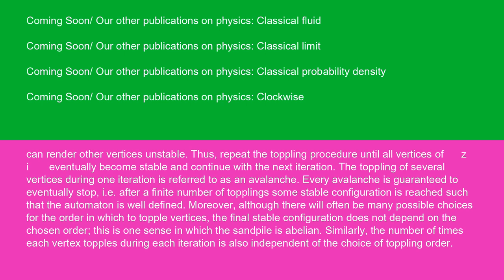Moreover, although there will often be many possible choices for the order in which to topple vertices, the final stable configuration does not depend on the chosen order. This is one sense in which the sandpile is Abelian. Similarly, the number of times each vertex topples during each iteration is also independent of the choice of toppling order.